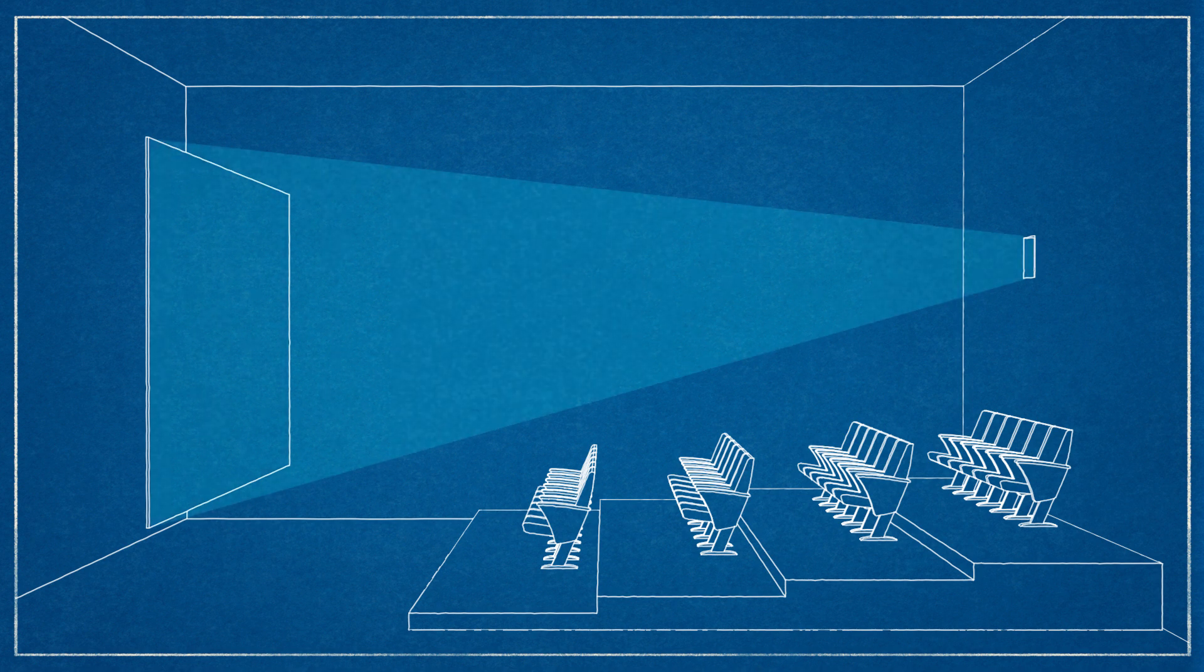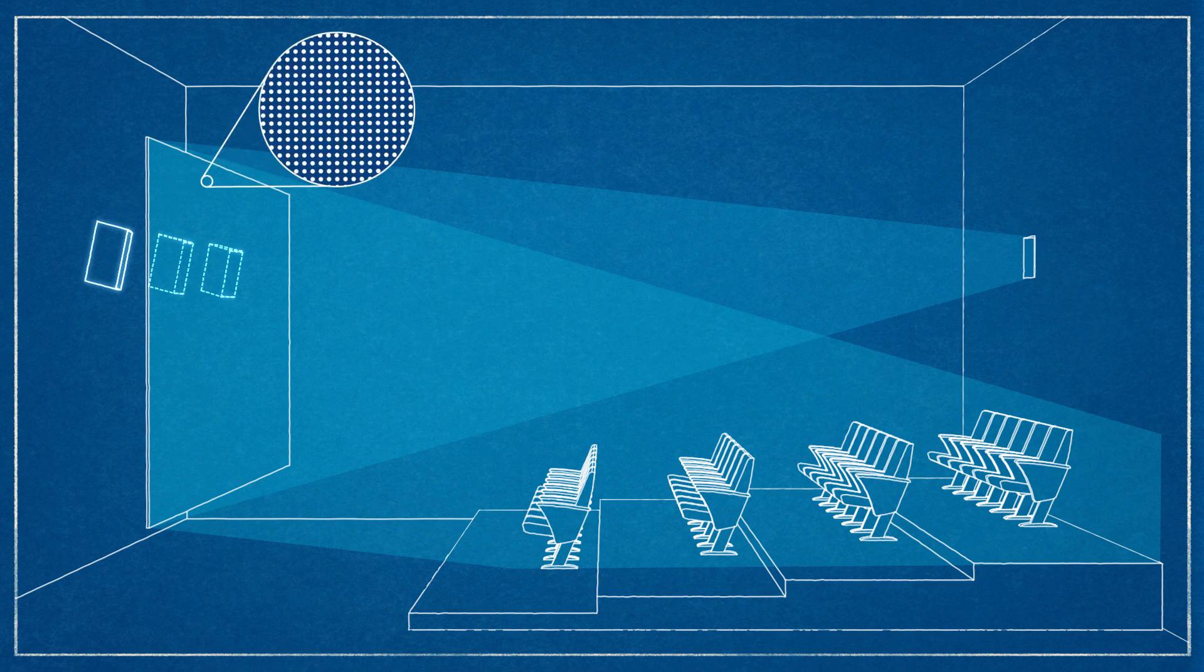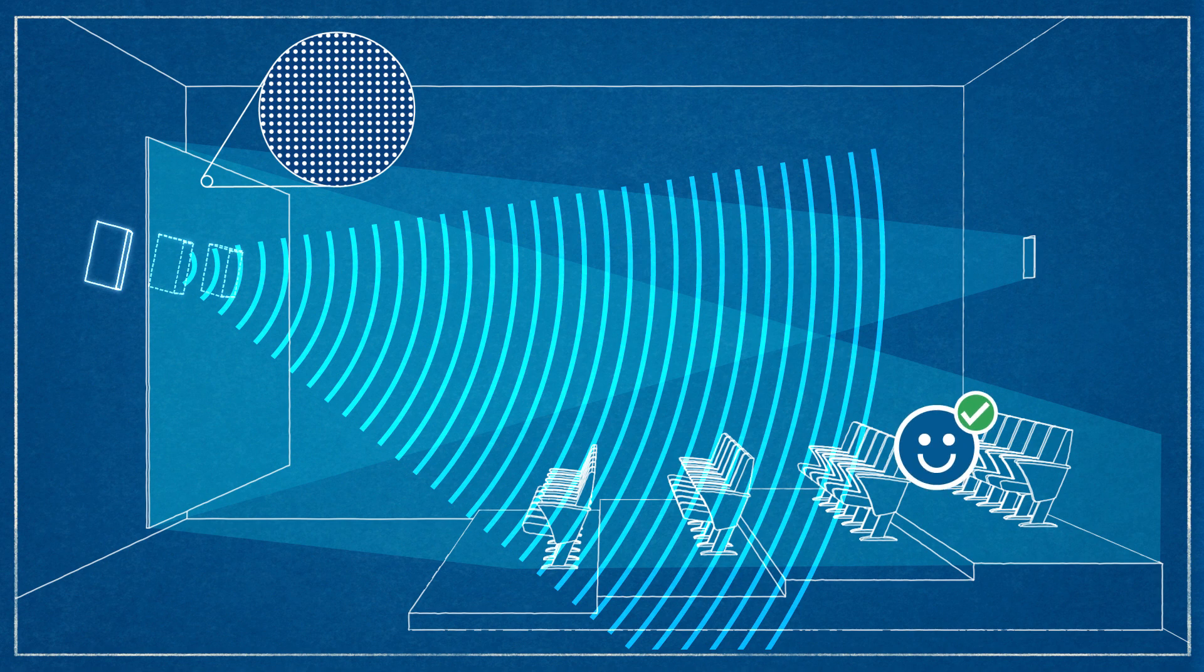Historically, movies have been projected onto a screen at the front of the room, and the image is then reflected back to the viewer. To deliver the localized soundtrack, loudspeakers have been placed behind a perforated screen, allowing most of the sound to pass through. This movie-going experience is what audiences have come to expect and enjoy.